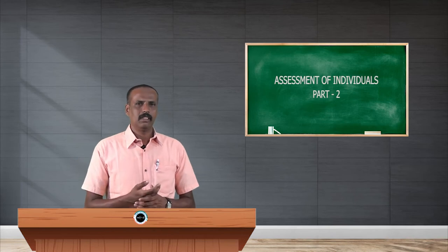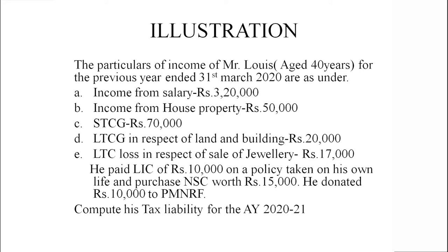Let us have one example. The particulars of income of Mr. Lewis — his age is less than 40 years. For the previous year ended 31st March 2020: salary income rupees 3,20,000; house property income rupees 50,000; short term capital gain rupees 70,000; long term capital gain in respect of land and building rupees 20,000; loss on long term capital asset — sale of jewellery — rupees 17,000. Investments: LIC premium on his own life rupees 10,000; NSC purchased rupees 15,000; donation to Prime Minister National Relief Fund rupees 10,000.